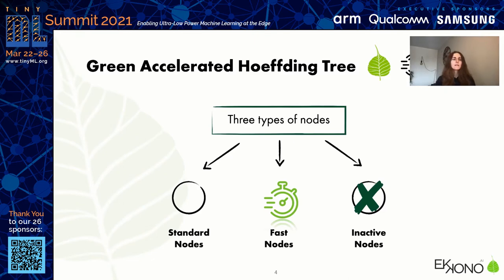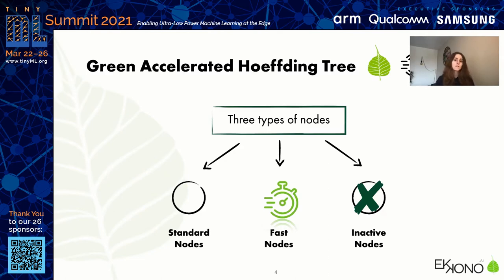The idea here is that we have an energy budget and we want to use it in a smart way, by spending more energy on those parts of the trees that have a higher impact on a positive increase of accuracy, and saving energy and memory by deactivating those nodes with the lowest impact. In the end, we have a hybrid solution with an algorithm that is going to grow the tree adaptively.